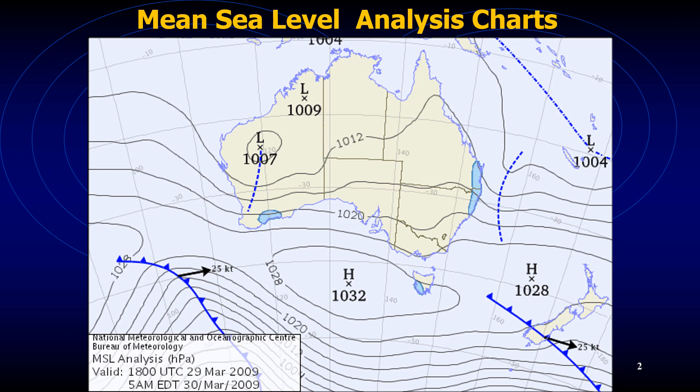Analysis charts are also known as mean sea level analysis charts, or MSL analysis, where the pressures are provided in hectopascals as you see on the bottom left-hand corner. These charts basically indicate the weather that exists at a particular point in time, showing current weather patterns.